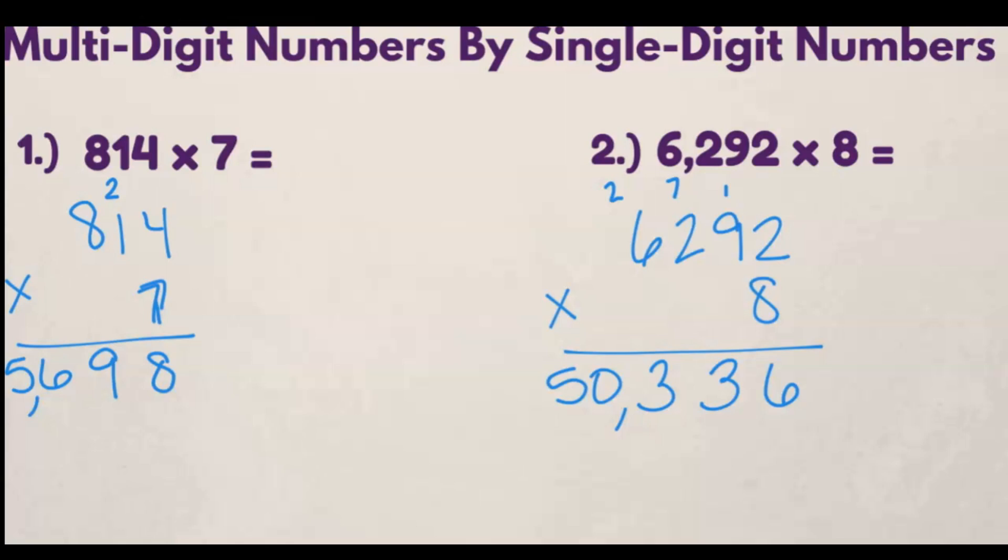So now that you've been through a couple problems with me, try this one on your own. Drop your answer in the comments below. What is 72,361 times 5? Good luck.